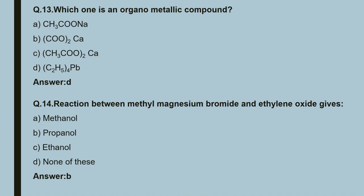Question 13: which bond is an organometallic compound? Options include CH₃CONa, (CH₃COO)₂Ca, (C₂H₅)₄Pb. The fourth option, (C₂H₅)₄Pb, is an organometallic compound. So the correct answer is D.